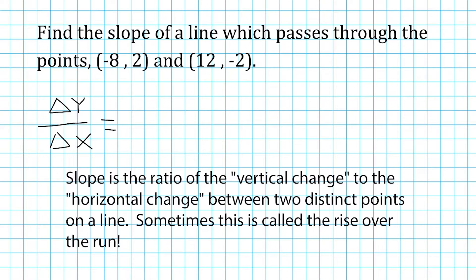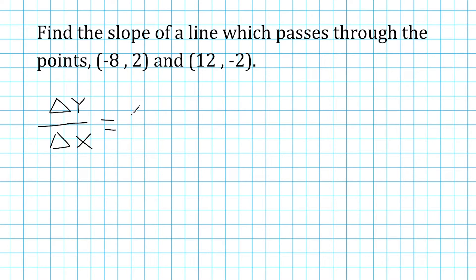Now to determine this, what we do is we take from our pair of points the second y value, which is called our y2, and subtract from it our first y value, or y1. And for the denominator, we take our second x, or x2, and we subtract from that x1.